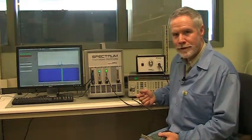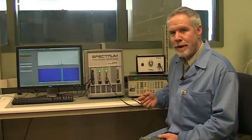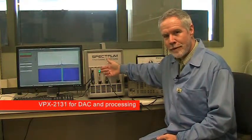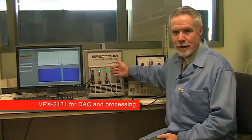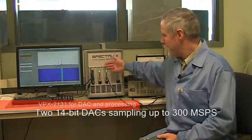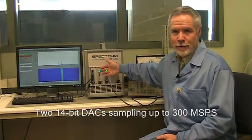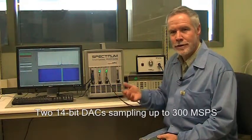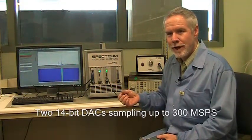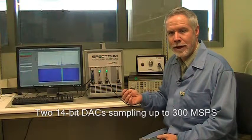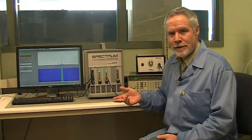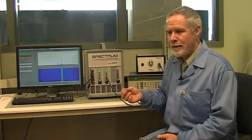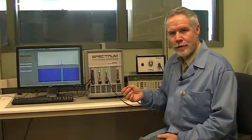The second board in the system is Spectrum's VPX 2131, and the 2131 is very similar to the VPX 1131. The 2131, however, instead of having analog-to-digital converters, it has digital-to-analog converters. It's a dual DAC board, which has two DACs operating at up to 300 MHz per second, and the DACs are at 14 bits.